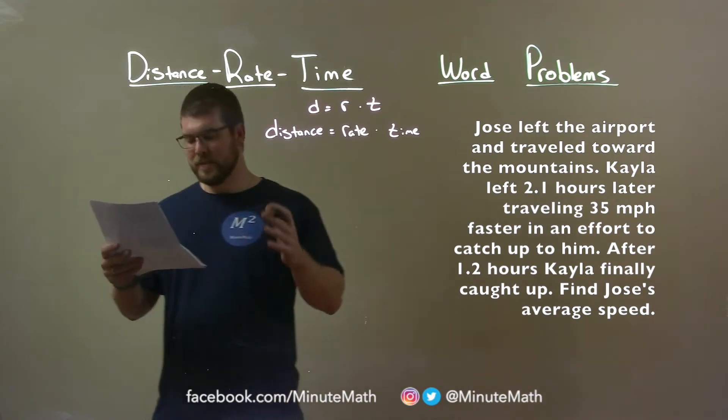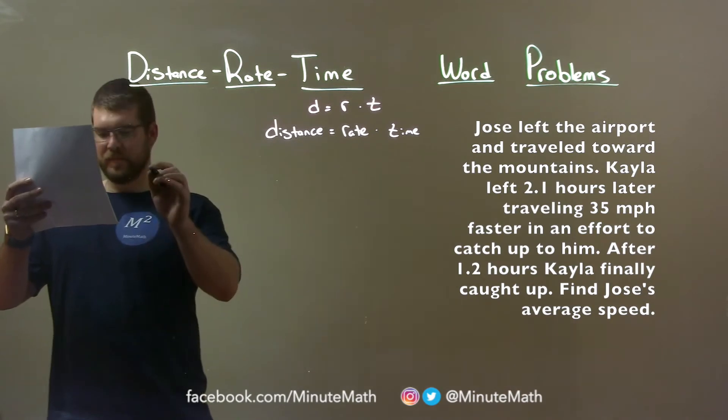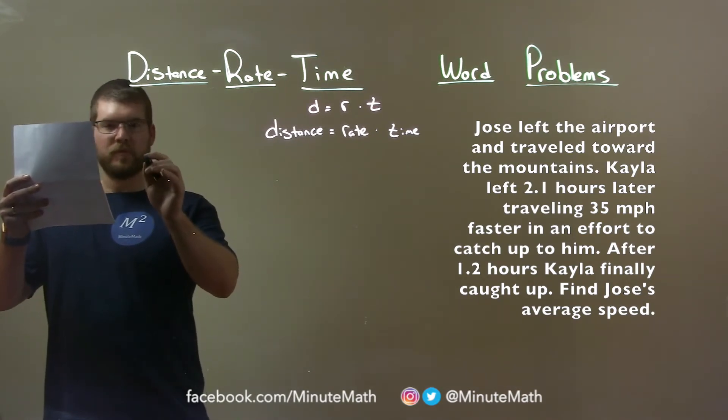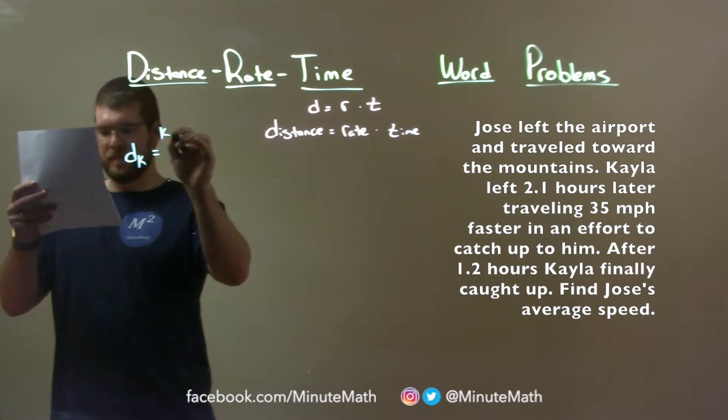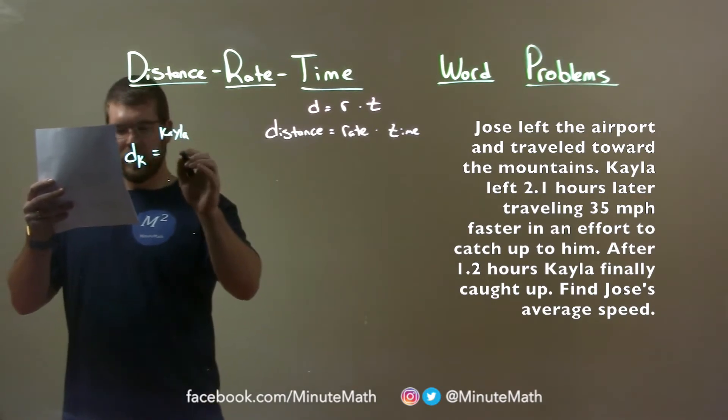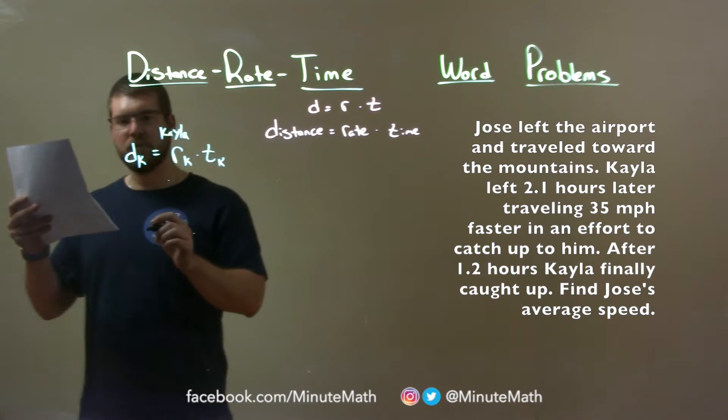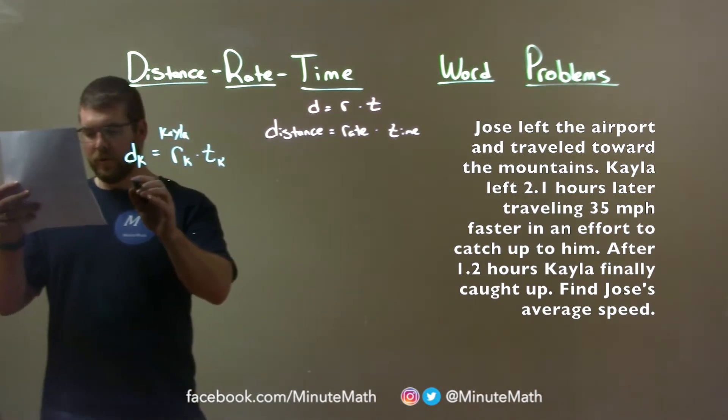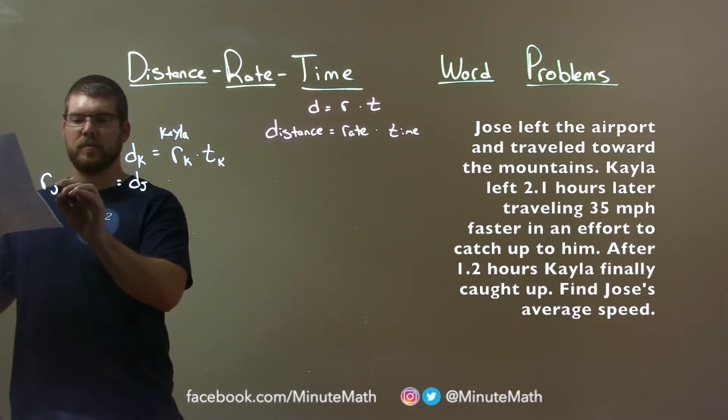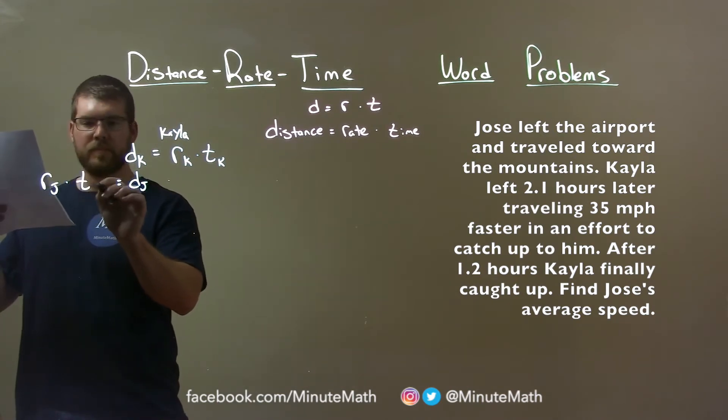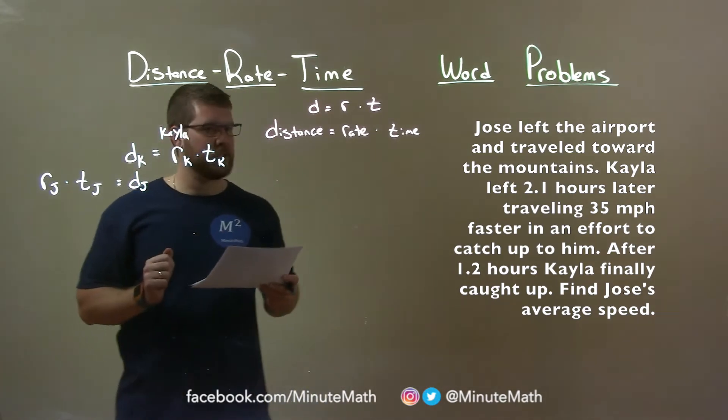We have two formulas I'm going to put together here. Let's do Kayla's first. Distance for Kayla is equal to the rate of Kayla times Kayla's time. And the distance for Josie is the rate for Josie times the time for Josie. We know the overall distance between the two, DK and DJ, will be the same.